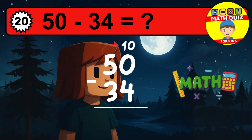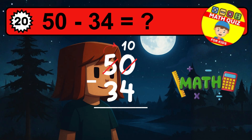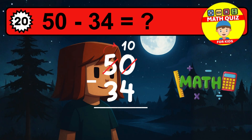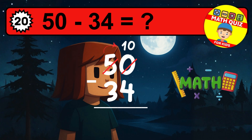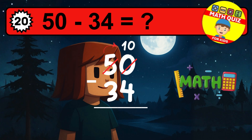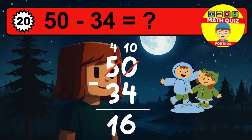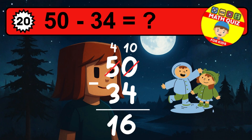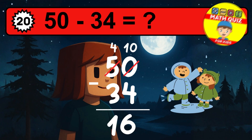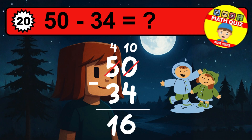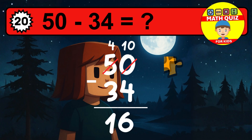Let's solve this step by step. We start with the units. Zero minus four is not possible, so we need to regroup. We take one ten from the tens column. Now we have four tens, and the units become ten. Now we subtract. Ten minus four is six.